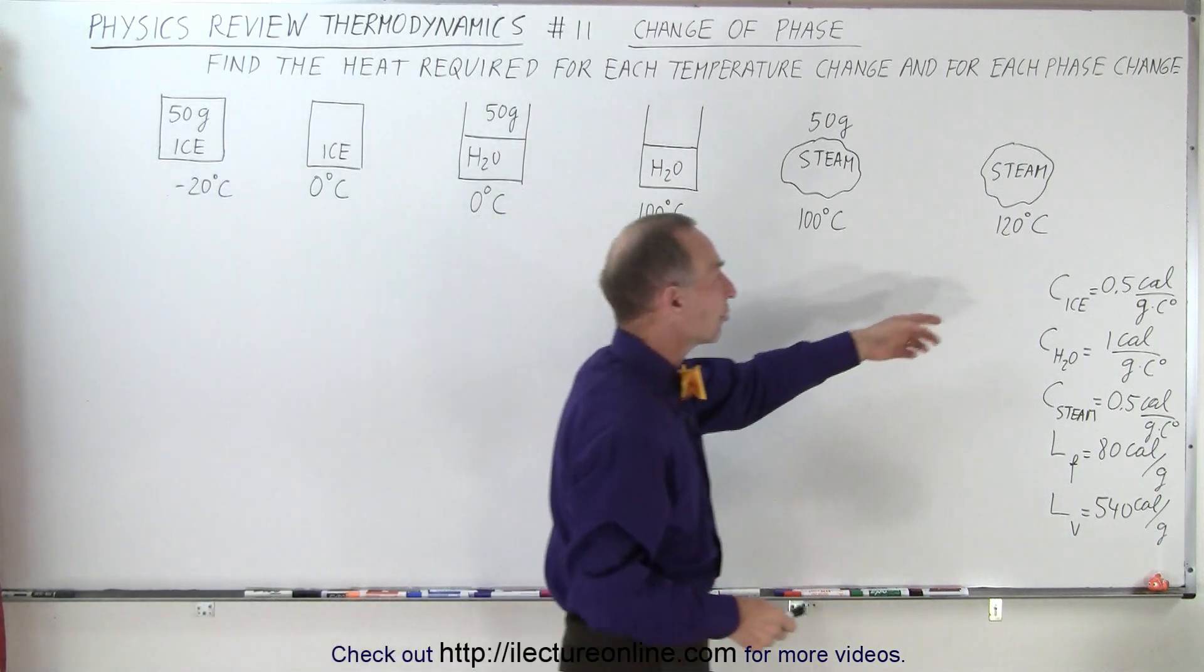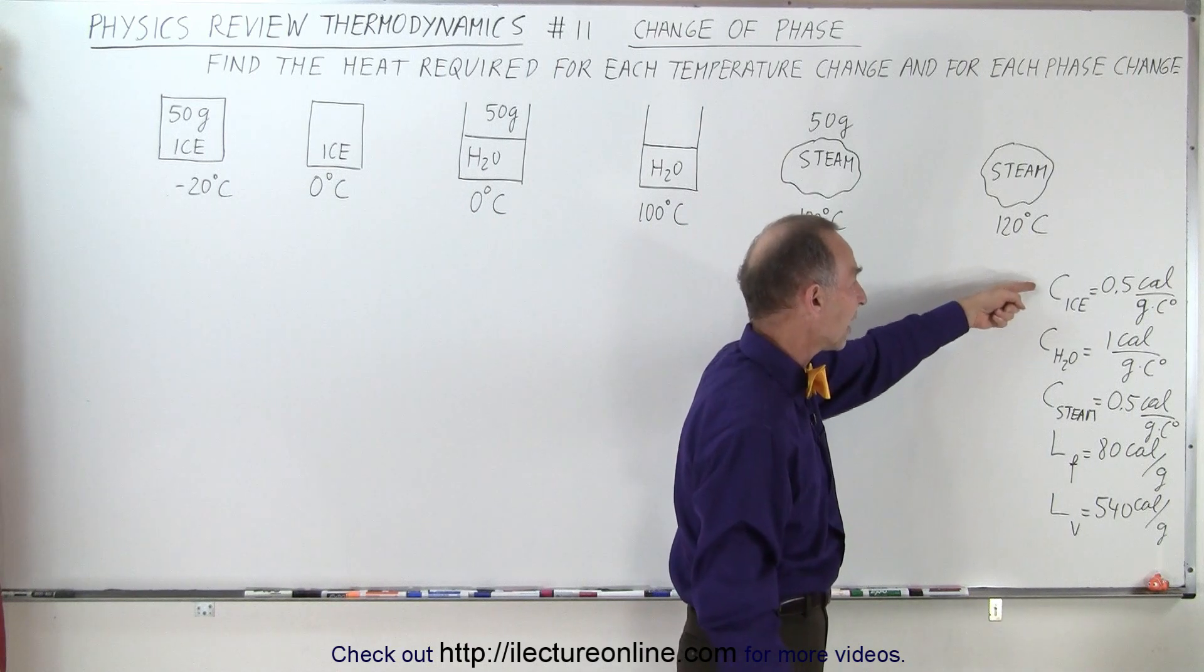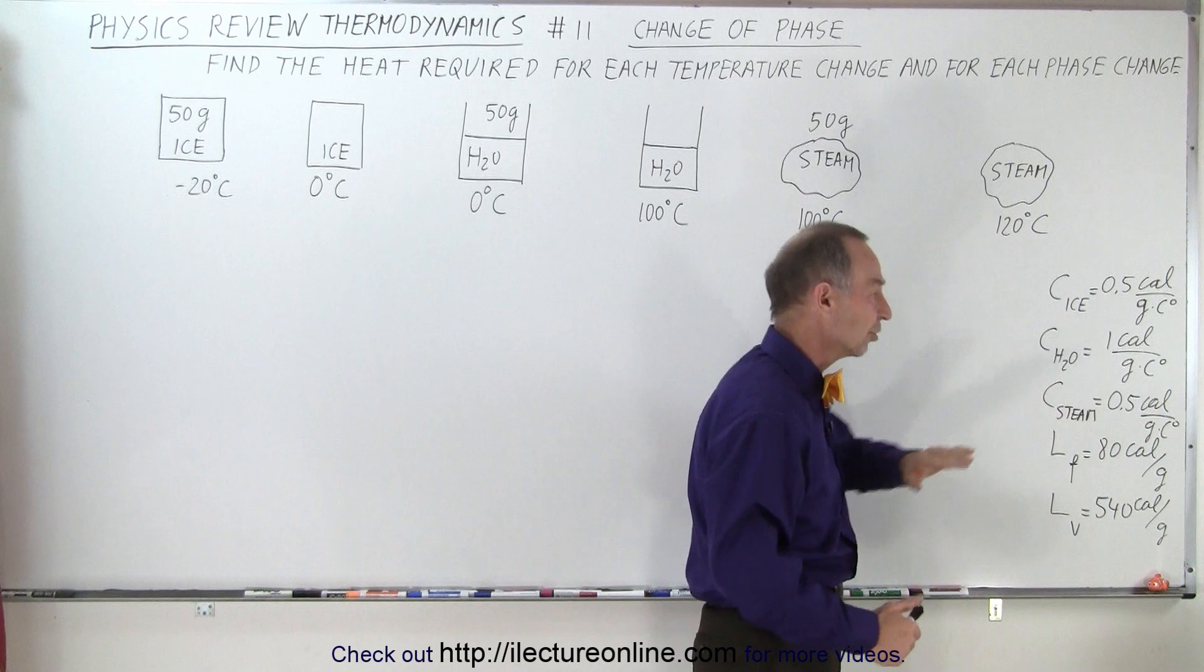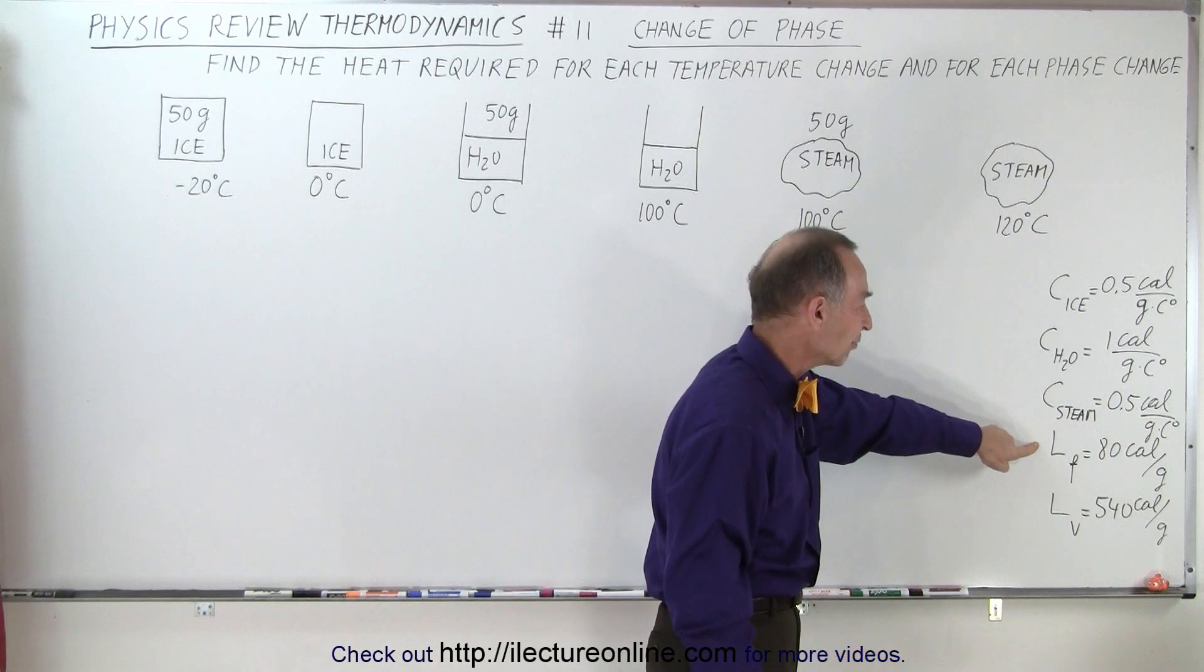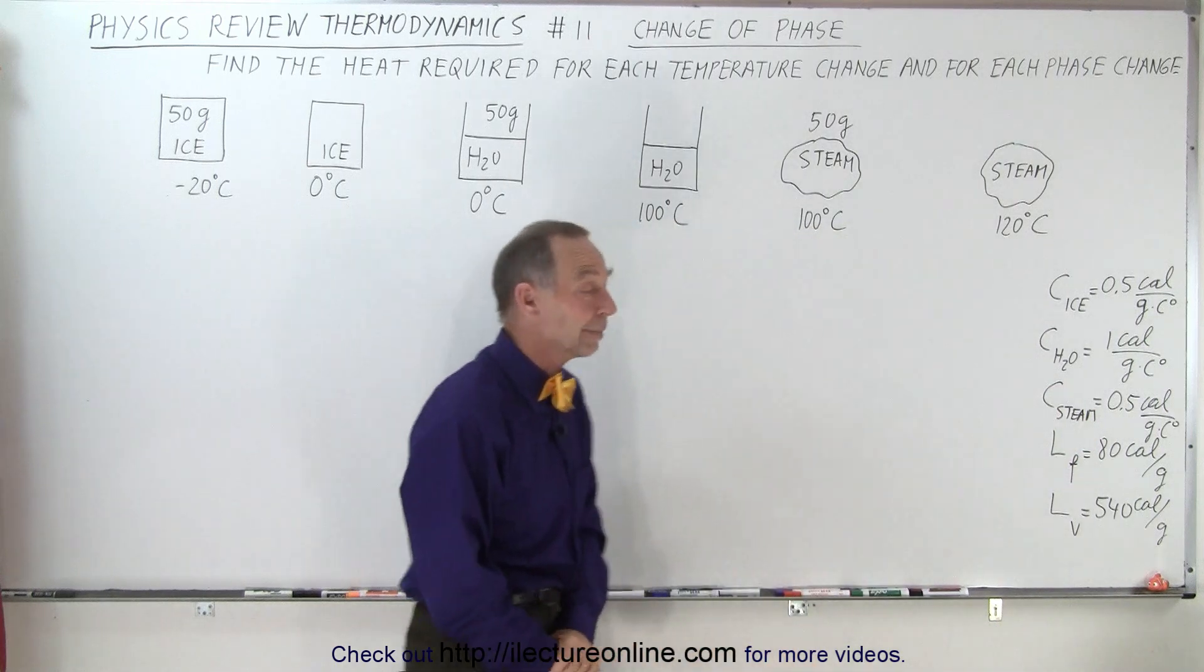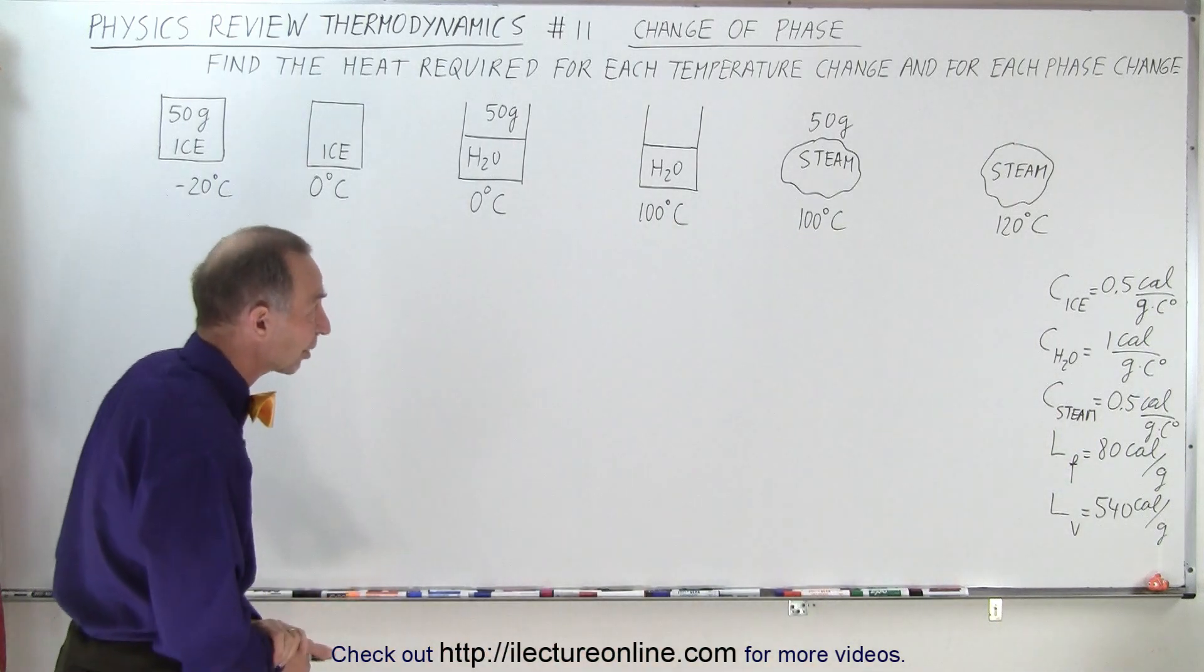I've given you some indication here as to the specific heat of ice, water, and steam. The steam is a little bit less than 0.5, but we'll just call it 0.5. And then we also have the latent heat of fusion and the latent heat of vaporization, all of them in calories per gram, and calories per gram per Celsius degree.